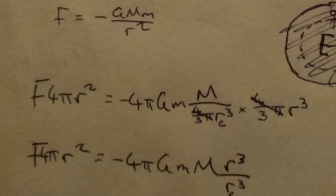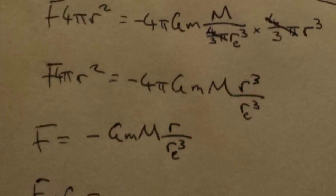So, what we get is minus 4 pi Gm capital M over the volume of the Earth, which is 4 over 3 pi r_e cubed, I'm going to use r_e to mean the radius of the Earth, and multiply that by the volume of this sphere, which is 4 over 3 pi r cubed. Now, the 4 over 3 pi's cancel, and what we're left with is F times 4 pi r squared equals minus 4 pi Gm capital M r cubed over r_e cubed.